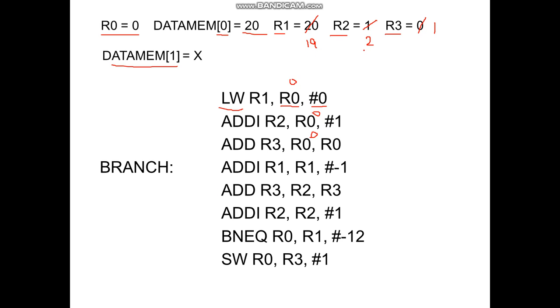For the third instruction, we are going to add R3, R2, R3. So initially it was 1 plus 0, which will become 1. And we are going to increment R2 by using add immediate R2, R2, hash 1.